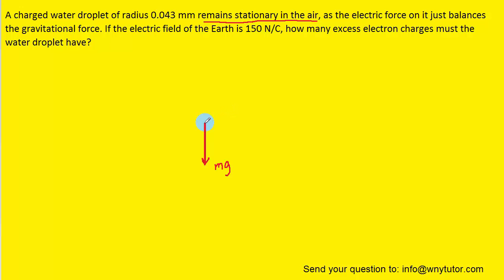In order to float, the downward gravitational force must be balanced by an upward force of some kind. So we know that we can draw a second force vector that's pointing upward, and it's going to have to have the same magnitude as the gravitational force in order for this water droplet to stay stationary in the air.